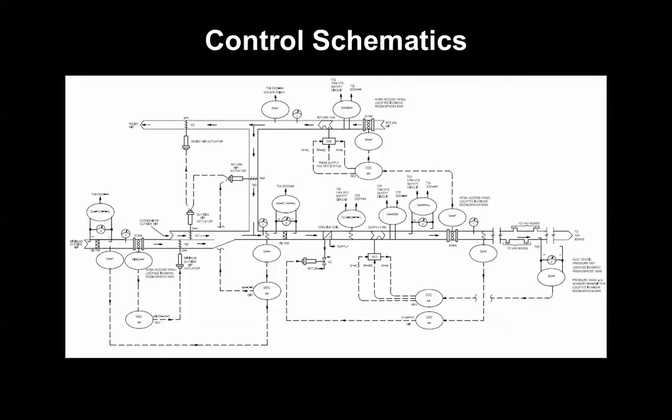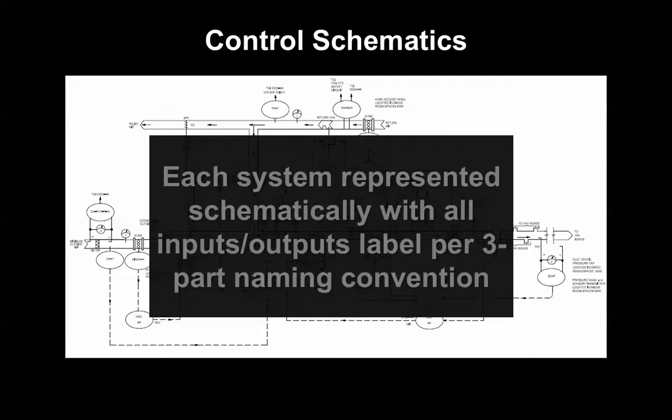We also looked at some control schematics and saw how condensed these were with information. So with something like a system diagram backdrop, you have an overall look at your system, and you have all of the different points, the inputs, the outputs, tied to the controller, as well as what goes to a safety switch, what type of manual gauges you have to look at your system, and what the point naming convention is. So each system should have this schematic representation with some of those standards about input, output, and how we name our DDC points.